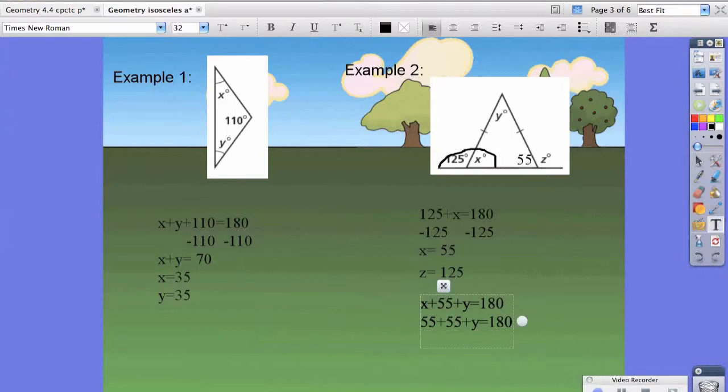So, we're left with 110 plus Y equals 180. And Y is equal to 70 degrees.